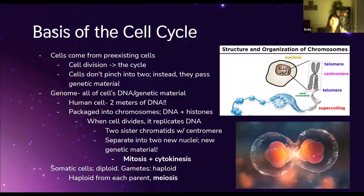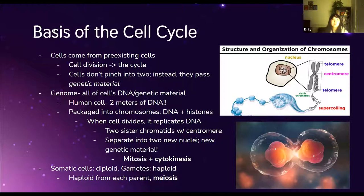Cell theory. A big part of cell theory is that all cells have to come from pre-existing cells. Where the first cells came from is kind of in a gray area in science right now, but because cells come from pre-existing cells, that means existing cells have to reproduce to give rise to new cells.